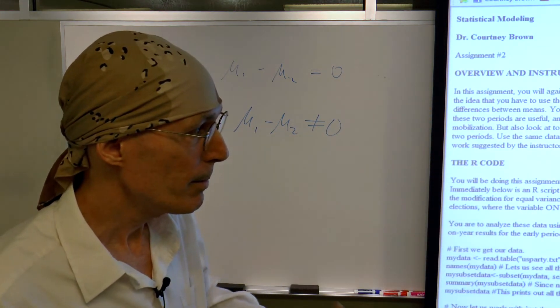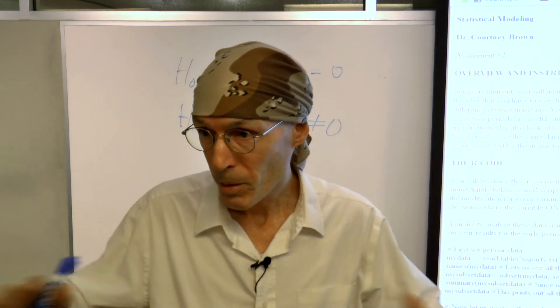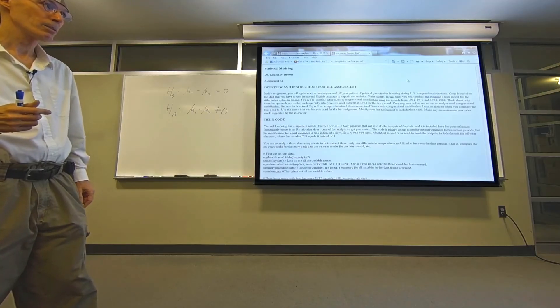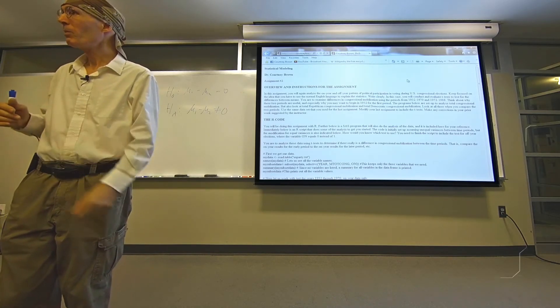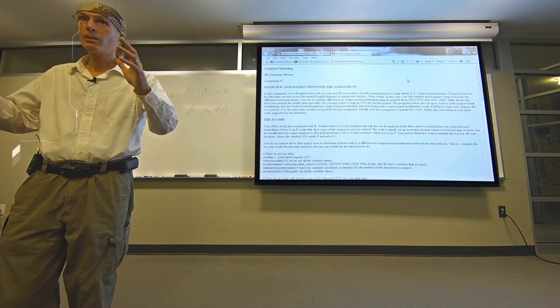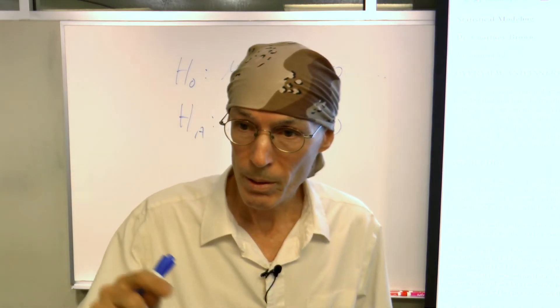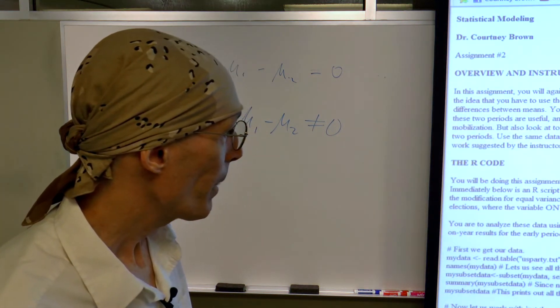But why 1932? Why not start earlier? The programs below are set up to analyze total congressional mobilization, but also total Republican and total Democratic congressional mobilization. The big question is total mobilization, the variable M-Tot-Cong, which is Republicans and Democrats added together. We're using the same data set as the last assignment. You have to modify the last assignment to include the t-test — you're going to use much of the same code and simply add the t-test to it.